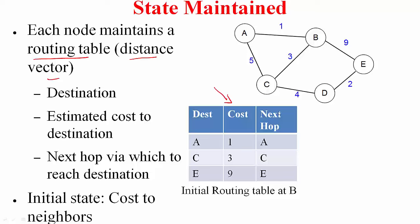The routing table consists of three components: the destination, the estimated cost to the destination — and I emphasize 'estimated' because the node does not really know the exact cost; it is making an estimate that converges to the actual cost as the algorithm proceeds — and finally, which next hop to take to reach that destination. For example, the initial routing table at node B has three neighbors A, C, and E with costs 1, 3, and 9 respectively. Since B can directly reach them, the next hop also corresponds to the neighbor itself.